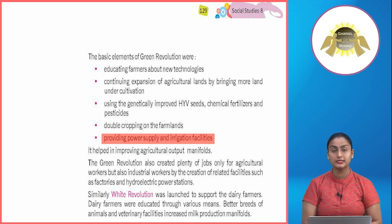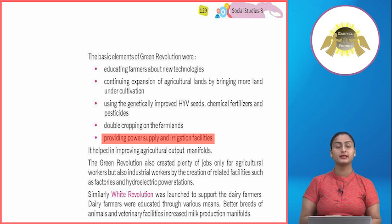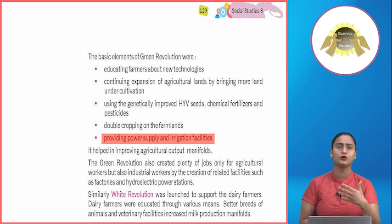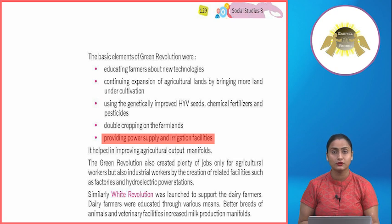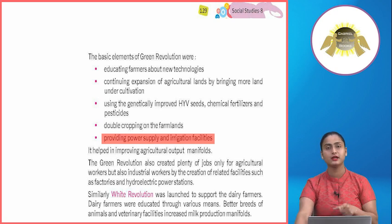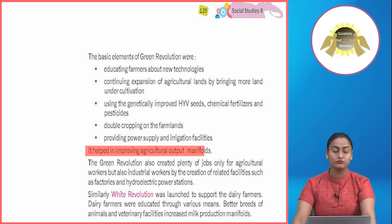The basic elements of the green revolution were: educating farmers about new technologies, continuing expansion of agricultural lands, using genetically improved HYV seeds, chemical fertilizers and pesticides, double cropping on farmlands, and providing power supply and irrigation facilities. The green revolution helped in improving agricultural output many-fold.